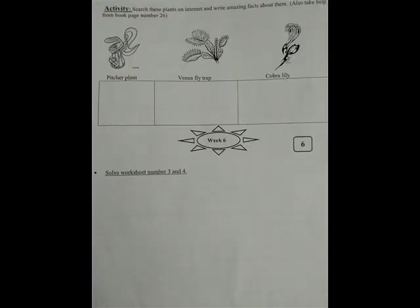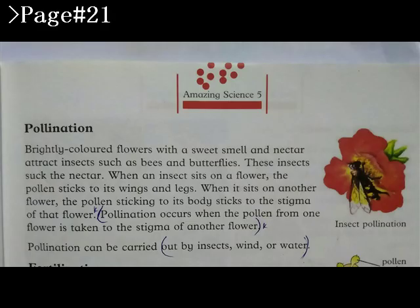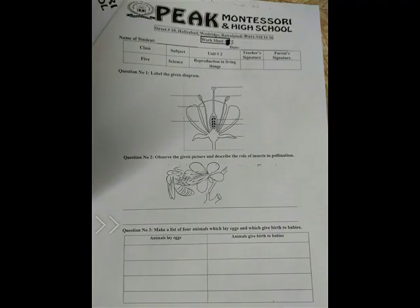Last but not the least, in week six you will solve worksheets number three and four. In worksheet number three, you will label the diagram showing different parts of a flower. Next, observe the given picture and describe the role of insects in pollination — you can take help from book page number 21. In question three, make a list of four animals which lay eggs and four which give birth to babies.